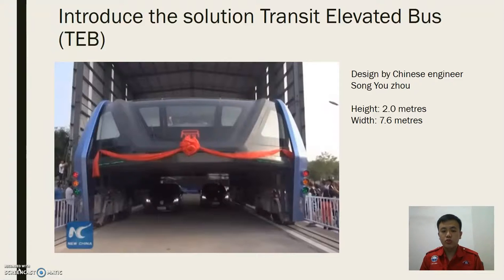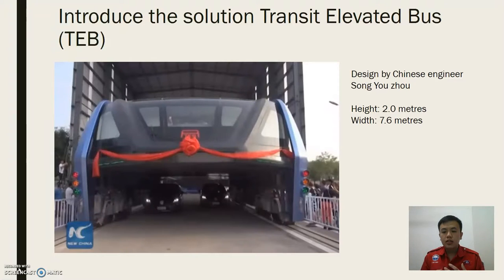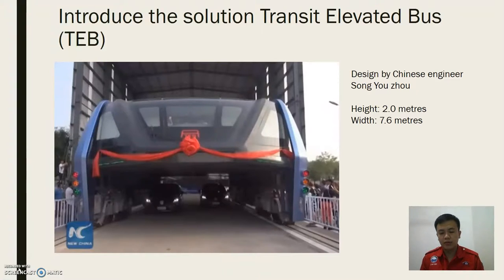Today I'm going to introduce you to the solution to this problem. This is a new type of public transportation named Transit Elevator Bus, which is also known as T-E-B. T-E-B is designed by a Chinese engineer named Song Wunzhong from China. Basically, the T-E-B is a straddling bus with a tunnel underneath, with a dimension of 2 metres of height and 7.6 metres of width.